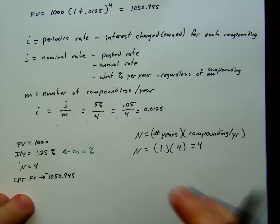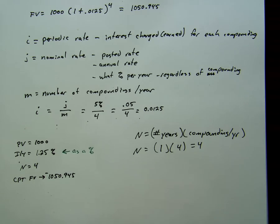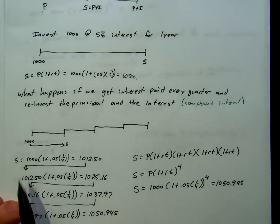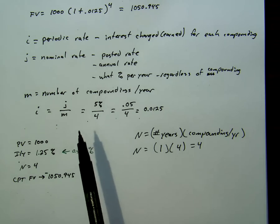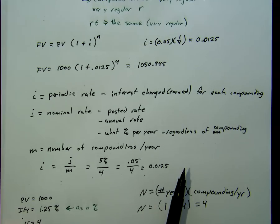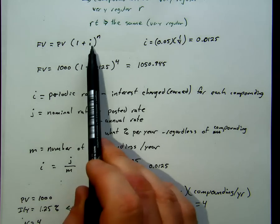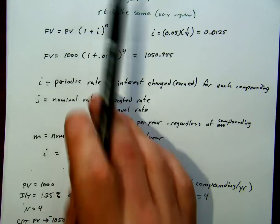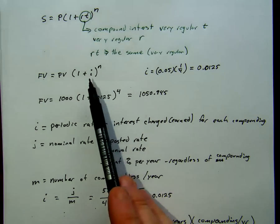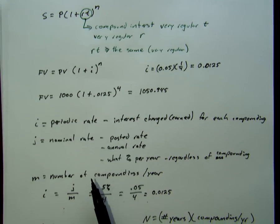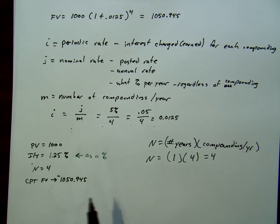So compound interest is basically taking our simple interest formula, converting it into a regular number of payments that follow the same pattern, and converting our RT value into i for the formula. We can also extract the data and put it in our calculator to have it do the work.